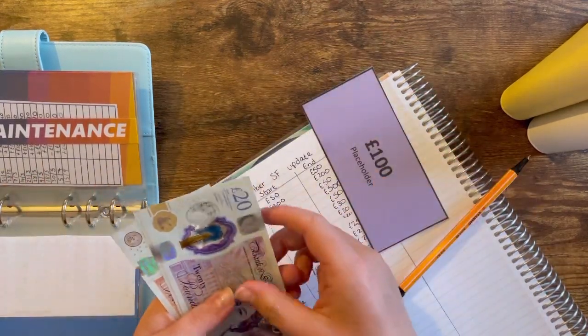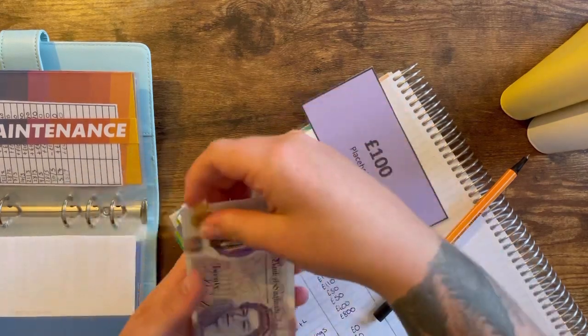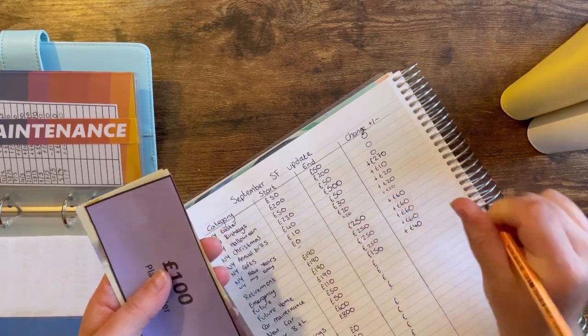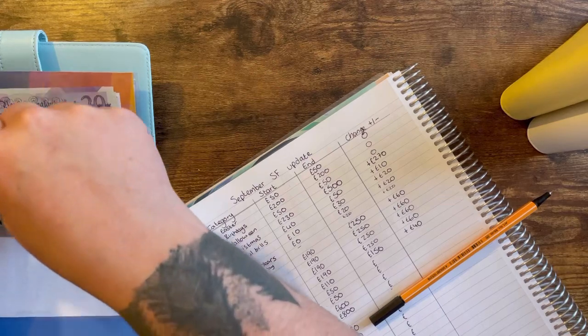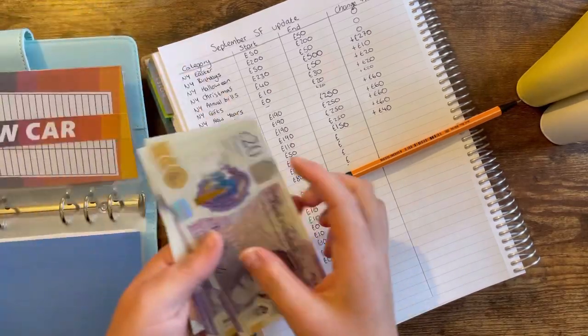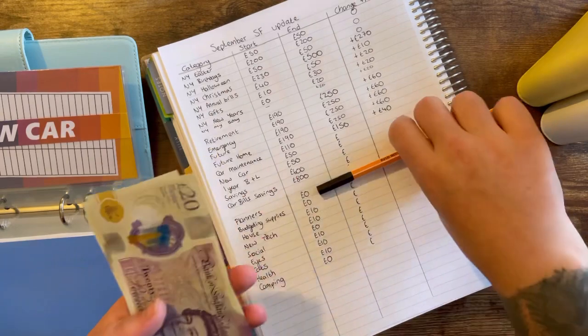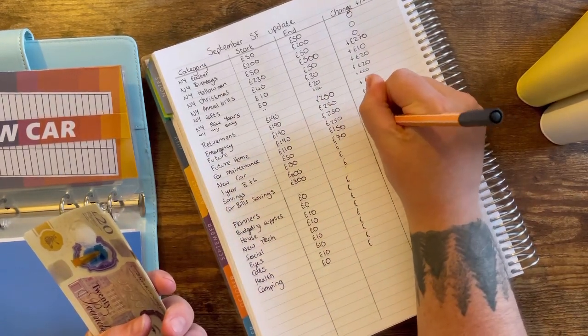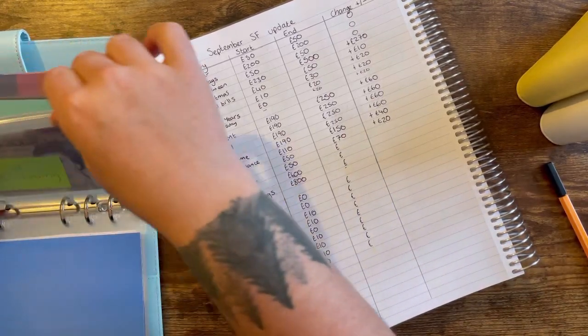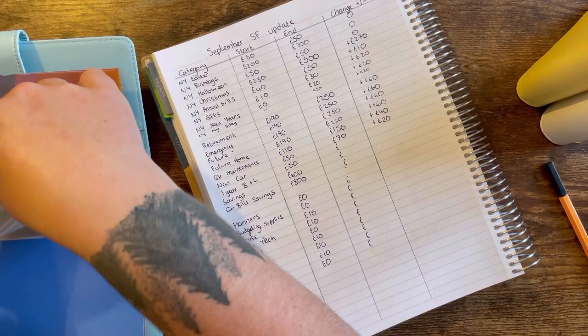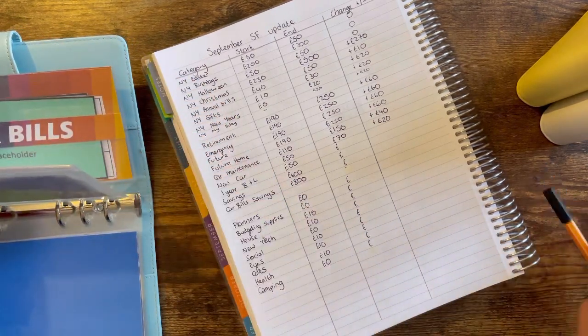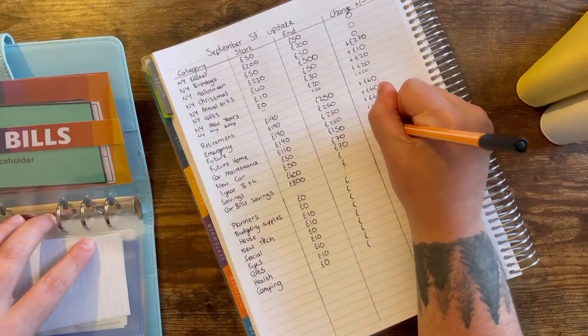Car maintenance has 150 pounds, and that is a positive change of 40. New car has 70, that is a positive change of 20 pounds. One year of bills and living, it's really difficult to take out, has 70, so that is also a positive change of 20.